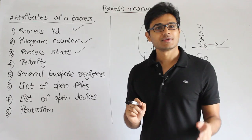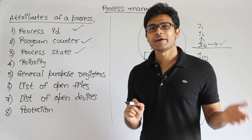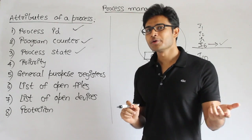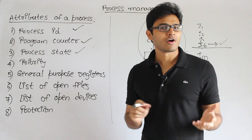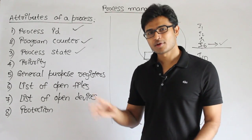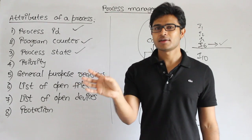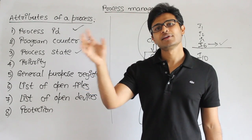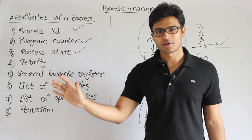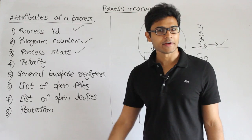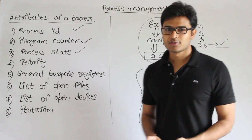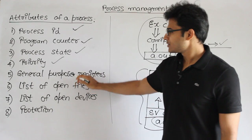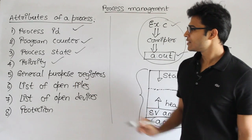Priority is a number — you can compare it this way: politicians have higher priority compared to normal people, so when they are on the road, the road is blocked for others. Similarly, when a new process with higher priority enters the environment, it will be given higher priority and everyone else will wait until it finishes. That is how priority is useful.